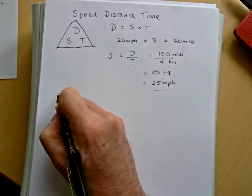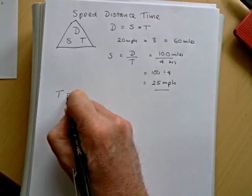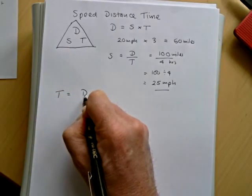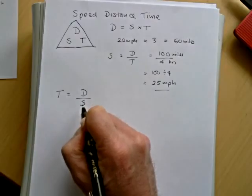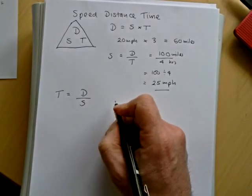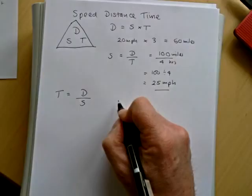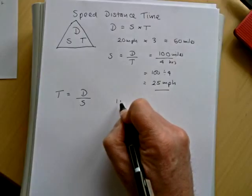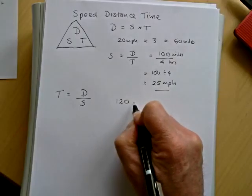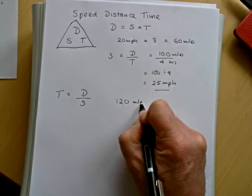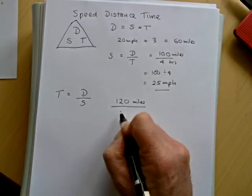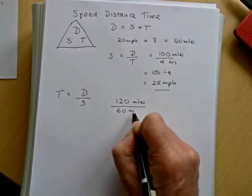And then finally if we want to find time, time equals the distance divided by the speed. So if for example I travel 120 miles in a car and I was travelling at 60 miles per hour.